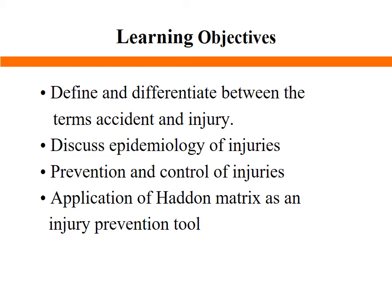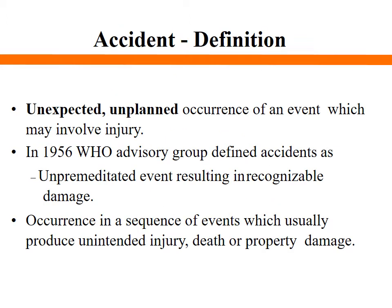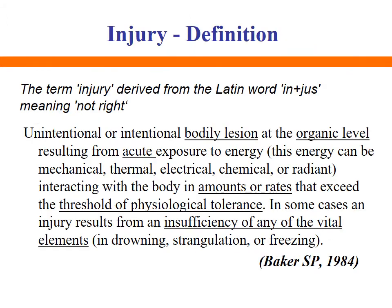Most people confuse accidents with injuries, but both are distinct concepts. An accident is an unexpected, unplanned occurrence of an event which may or may not involve injury. In 1956, WHO defined accidents as unpremeditated events resulting in recognizable damage, or as an occurrence in a sequence of events which usually results in unintended injury, death, or property damage. The key words here are unexpected, unplanned, and unpremeditated.